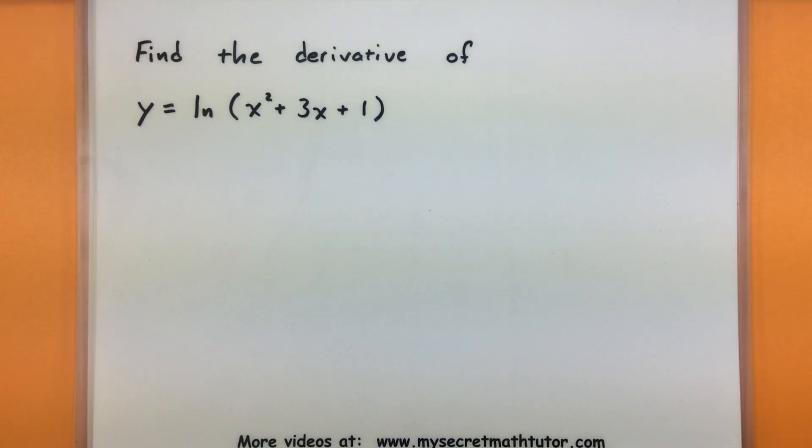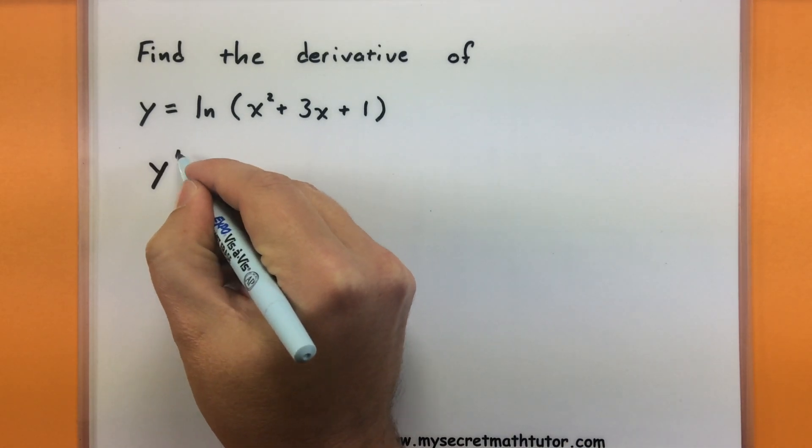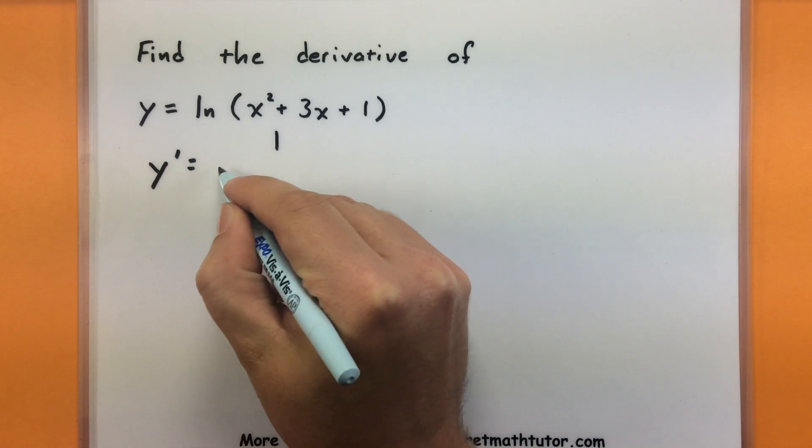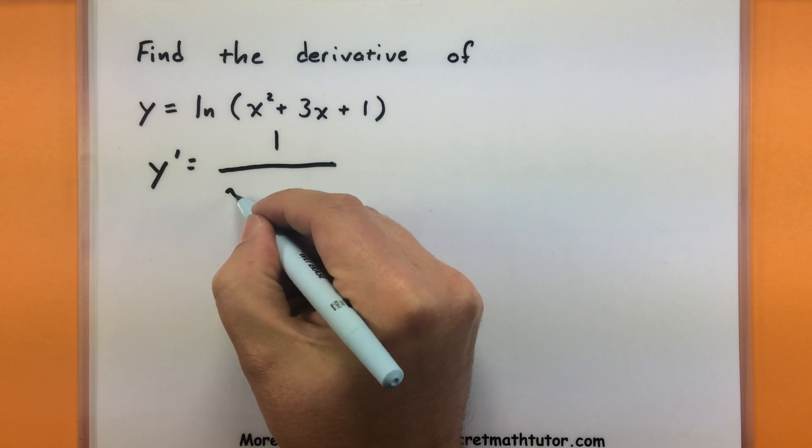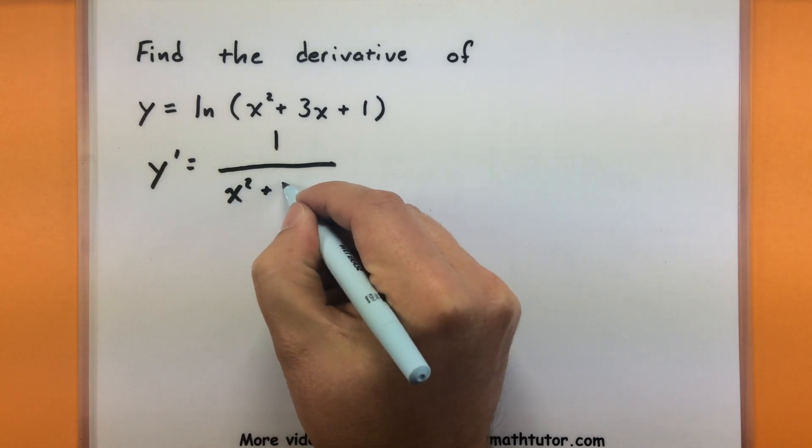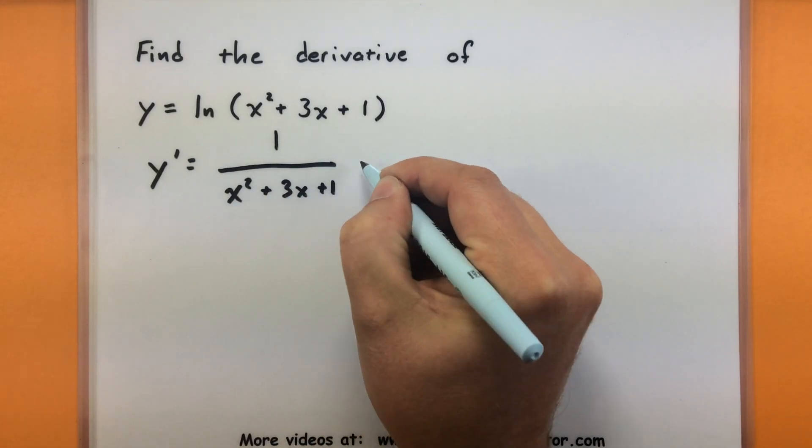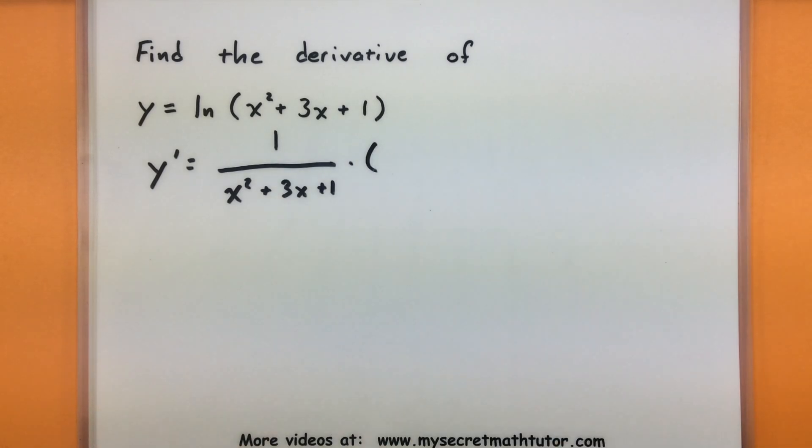We're going to use this on y equals the natural log of x squared plus 3x plus 1. So as we start off, when we take our derivative, we're going to go 1 over and we're going to leave all of this inside stuff exactly the same. So still an x squared plus 3x plus 1. And then we'll multiply this entire thing by the derivative of the inside.